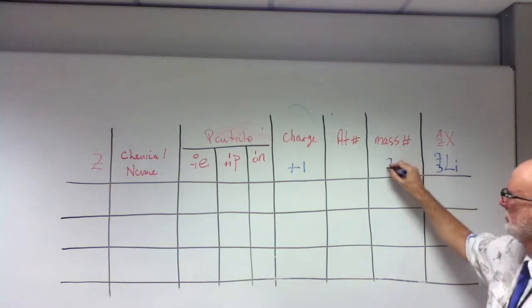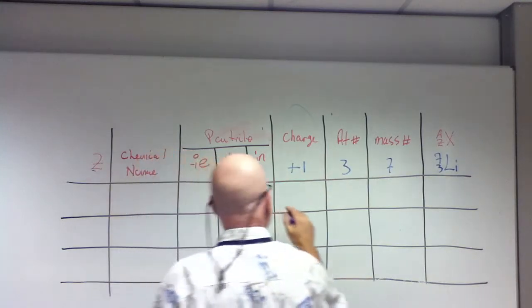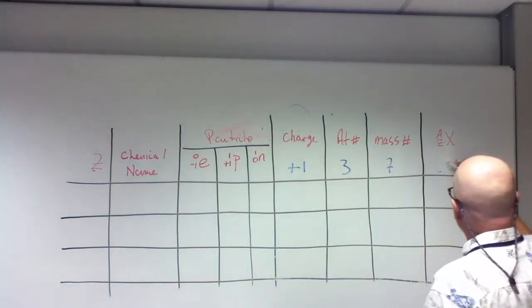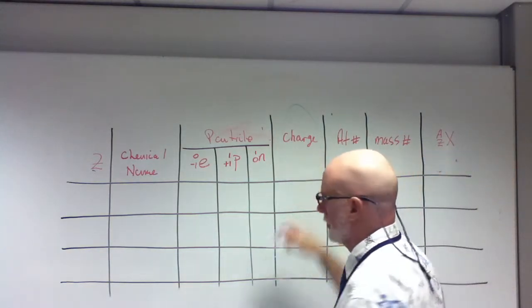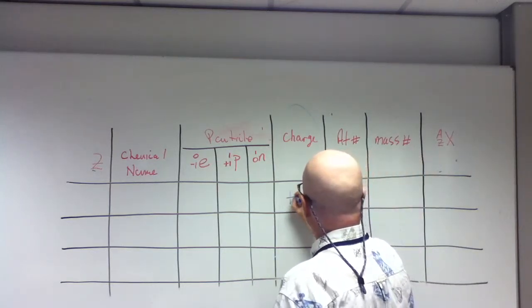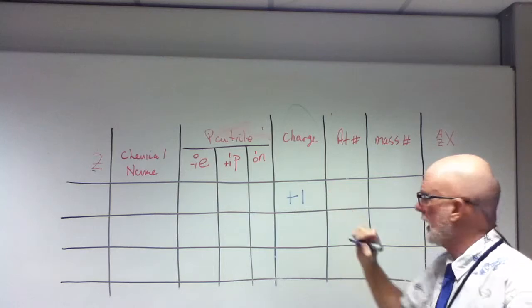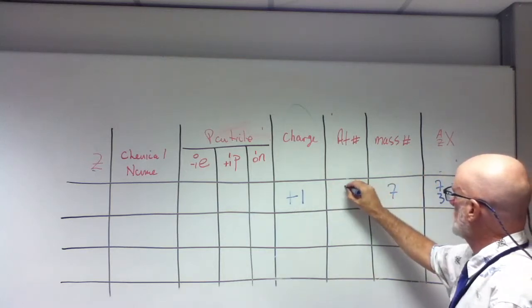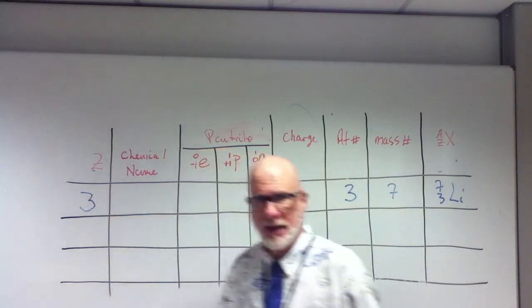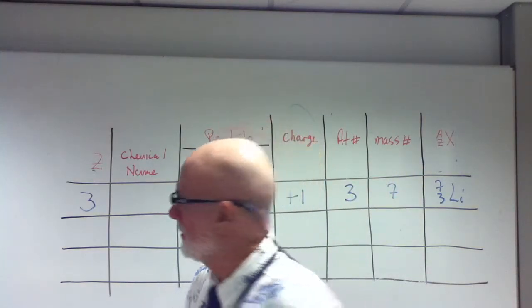So seven, the mass number, three, the atomic number. There's a three here. I'm off on level here. So say this again. Charge is positive one. Seven over three. Is that it? Yeah. Okay. So this is going to be seven, three, three there, right? Isn't it Z? What's the name? You need a periodic table. What's the name of this? Lithium. Lithium, good.